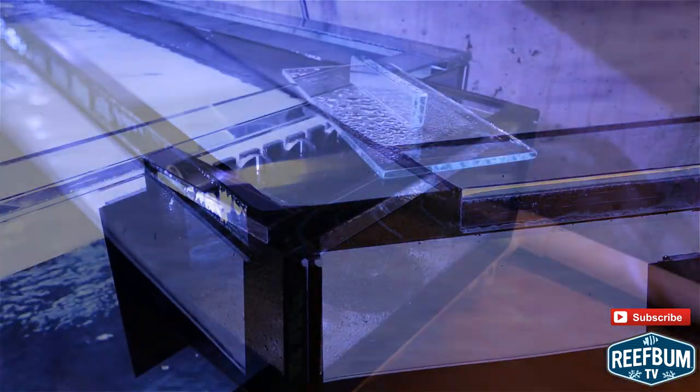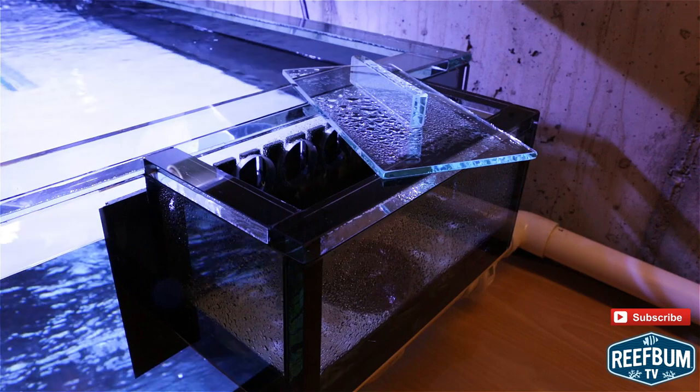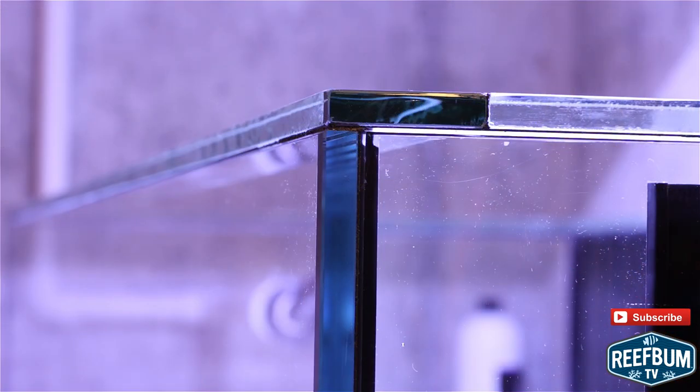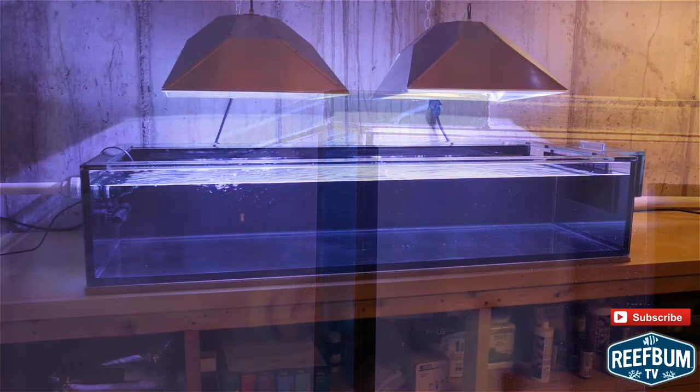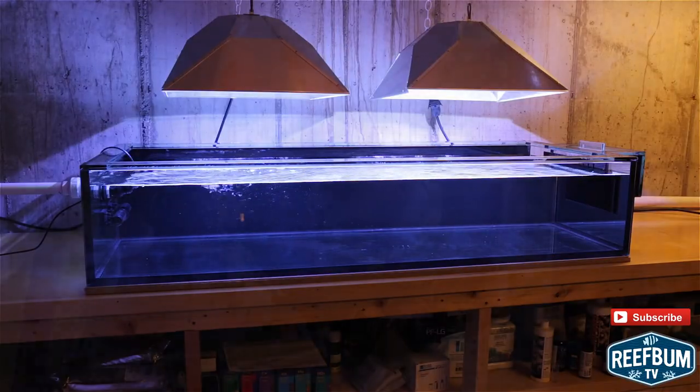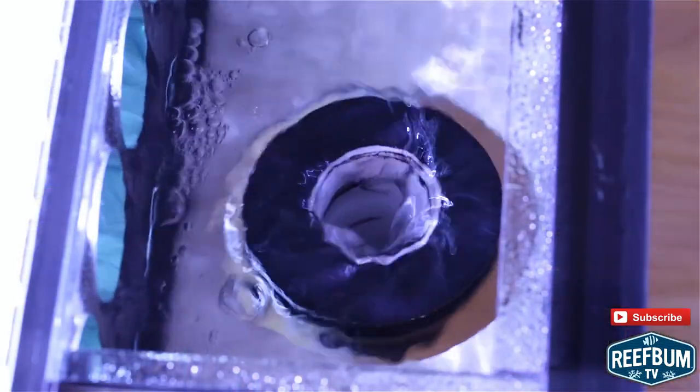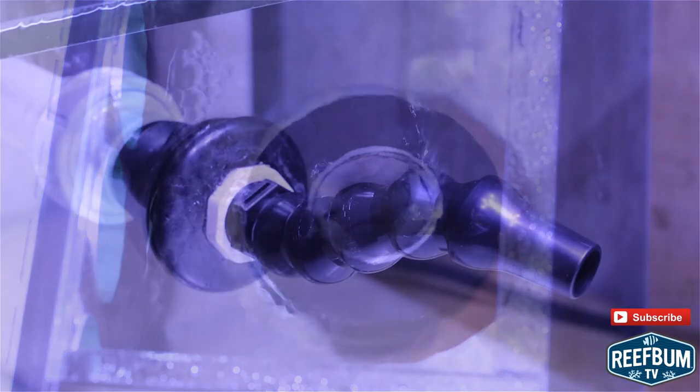Euro bracing, external overflow on the right side, one-half inch glass, low iron glass on the front. It has a painted back panel—it's black. It's got one one-and-a-half-inch drain and one one-inch return.